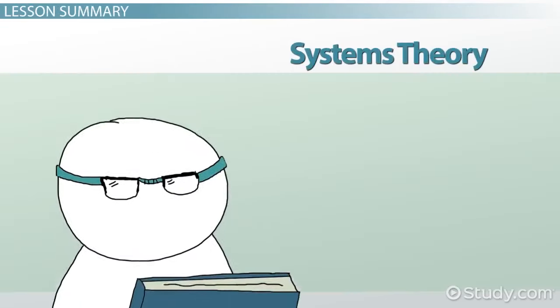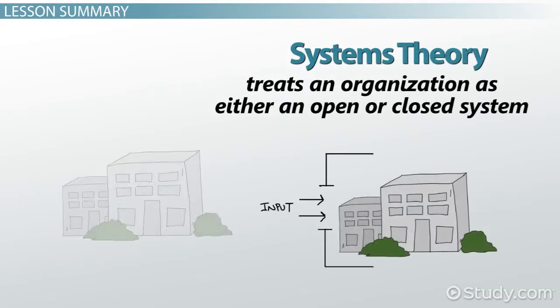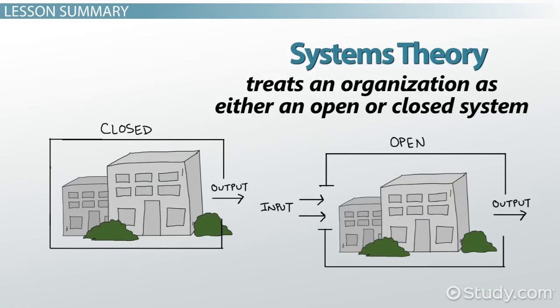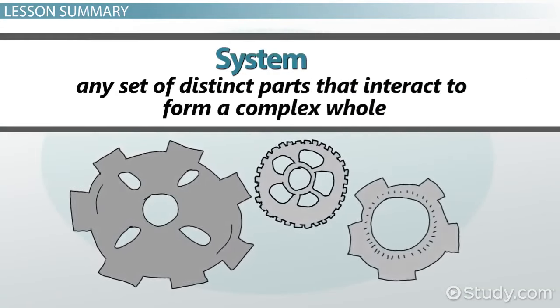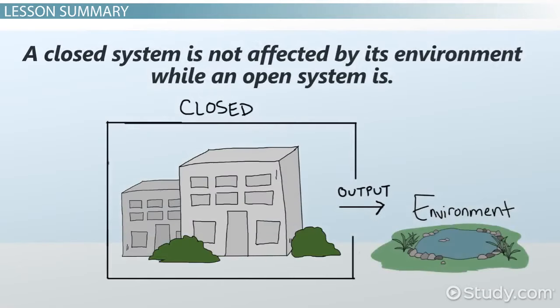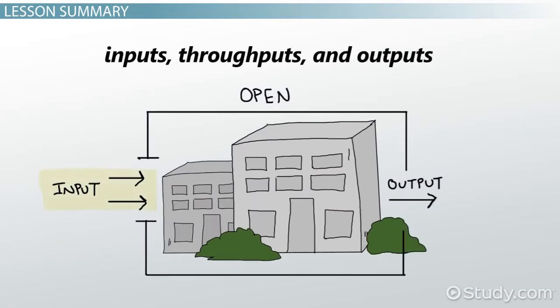Systems theory is one of the dominant organizational theories in management today. It treats an organization as either an open or closed system. A system is a set of distinct parts that form a complex whole. A closed system is not affected by its environment, while an open system is. An open system consists of inputs, throughputs, and outputs.